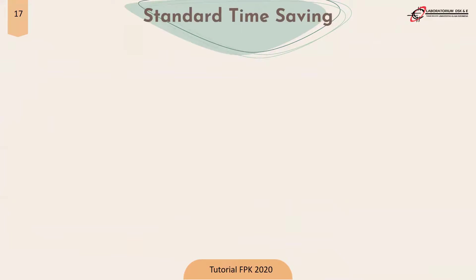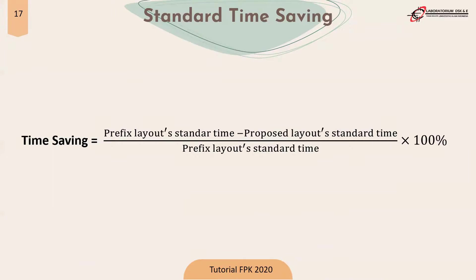The last topic is standard time saving. The time saving calculation requires a recapitulation of standard time using the TMU from prefix and purpose layout from the hand movement map. From the time saving formula, you can find out how much the purpose layout saves compared to the prefix layout in percentage. The formula is: Time Saving = (Prefix Layout Standard Time − Purpose Layout Standard Time) ÷ Prefix Layout Standard Time × 100%.